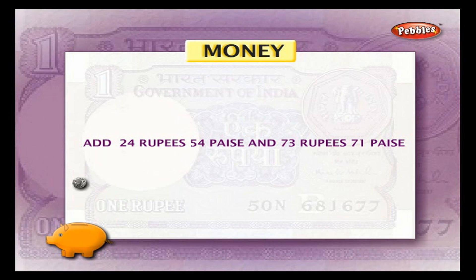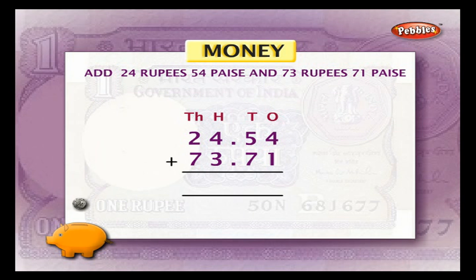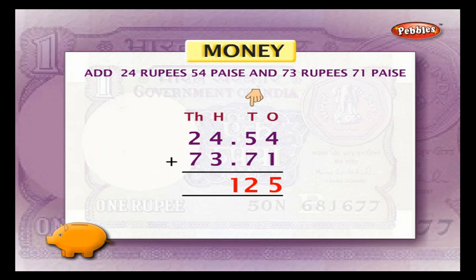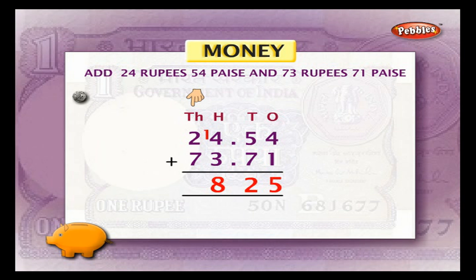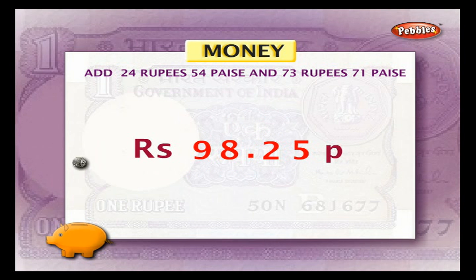Example 2: add 24 rupees 54 paisa and 73 rupees 71 paisa. Arrange them in column and do addition. Add the ones column: 4 plus 1 is equal to 5. Add the tens column: 5 plus 7 is equal to 12; write 2 below the tens column and carry over 1 to the hundreds column. Add hundreds column: 1 carry over plus 4 plus 3 is equal to 8. Add thousands column: 2 plus 7 is equal to 9. Place the dot in the answer. We get 98.25, that is 98 rupees and 25 paisa.